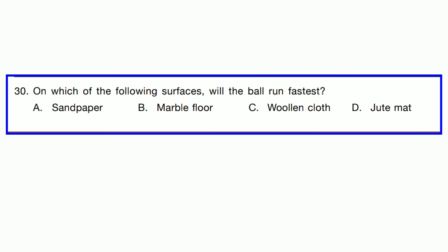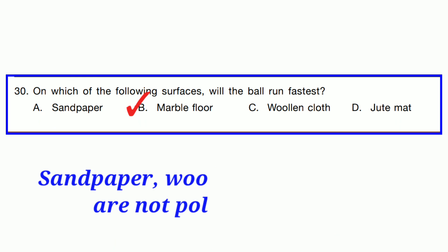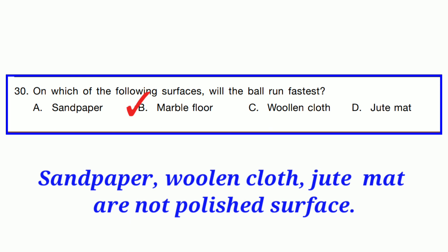Question number 30. On which of the following surfaces will the ball run fastest? It means we need a polished surface. So option B is correct: marble floor. Marble floor is a polished surface. Sandpaper, woolen cloth, and jute mat are not polished surfaces.